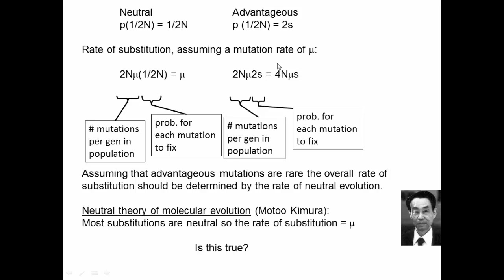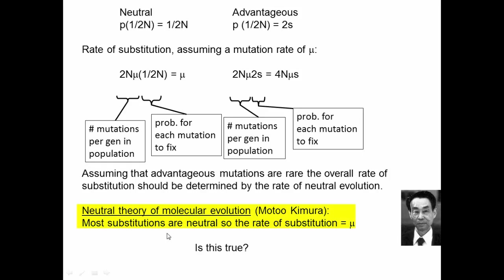However, mutations that improve fitness are probably much more rare than neutral mutations. So assuming advantageous mutations are rare, the overall rate of substitution should be determined by the rate of neutral evolution. This is what Motoo Kimura noticed — that most substitutions would be neutral, so the rate of substitution would equal the mutation rate, meaning the rate of molecular evolution would have nothing to do with population size, just a roughly constant rate based on DNA mutation rates.